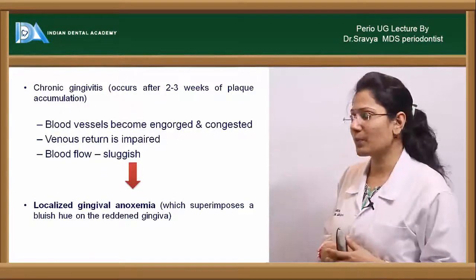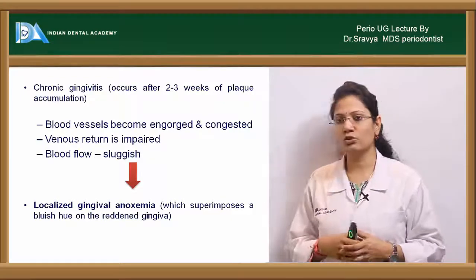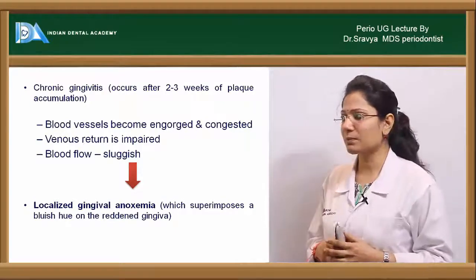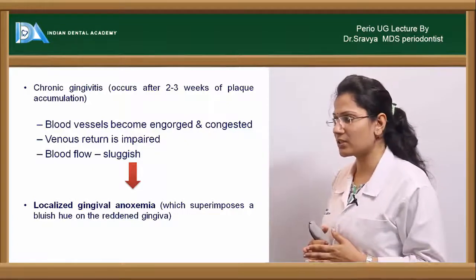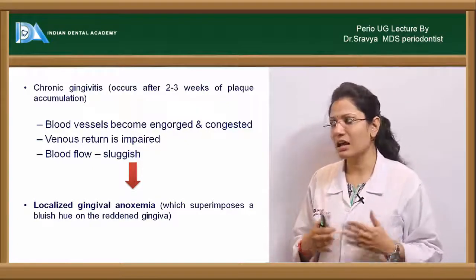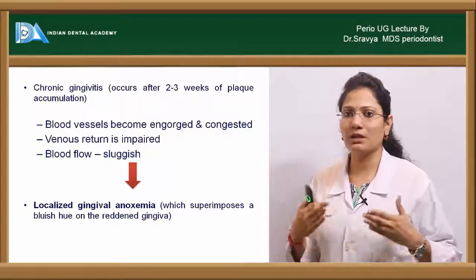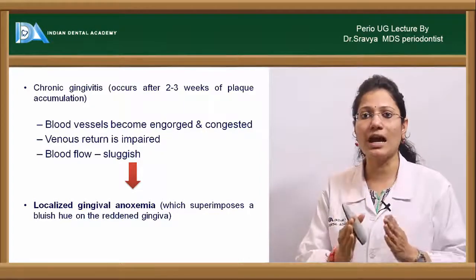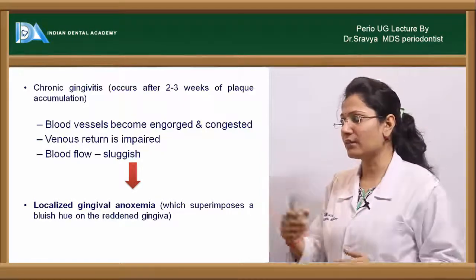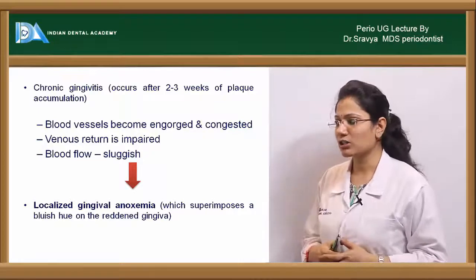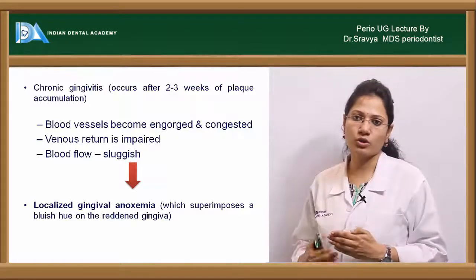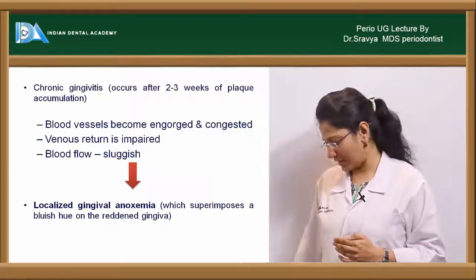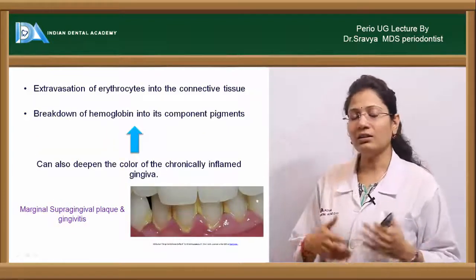Chronic gingivitis occurs after 2 to 3 weeks of plaque accumulation. The blood vessels become engorged and congested, venous return is impaired, and blood flow becomes sluggish. All this results in what is called localized gingival anoxemia.